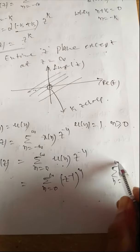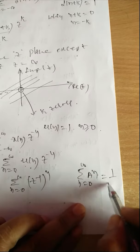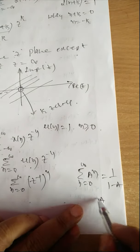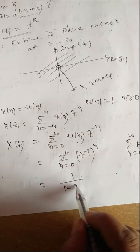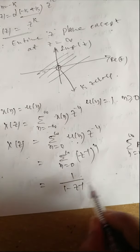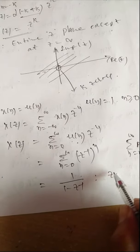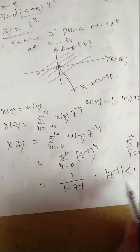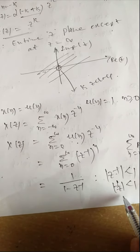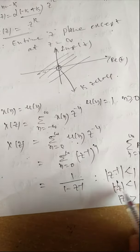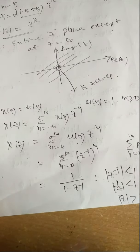We know the series: summation from n = 0 to ∞ of A^n = 1/(1-A), if |A| < 1. Similarly, this becomes 1/(1 - Z^(-1)), where |Z^(-1)| < 1, that is, |1/Z| < 1, meaning |Z| > 1. So the answer is X(z) = 1/(1 - Z^(-1)), with ROC: |Z| > 1.